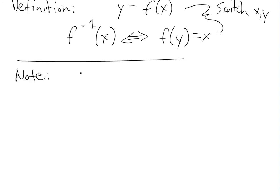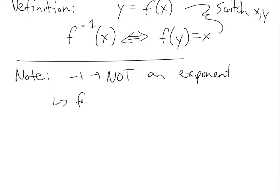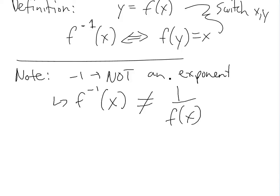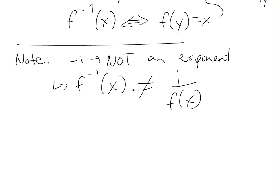Let's make some notes here to make sure you aren't confused. Negative 1 is not an exponent. So this means that f to the power of negative 1 of x does not equal f of x to the power of negative 1. It's not an exponent. And also it's not a derivative.